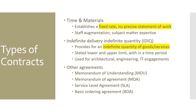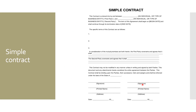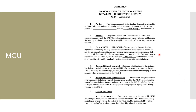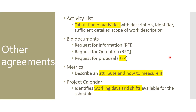Here is a sample of a simple contract showing how two business entities come together, the terms and conditions, and signatures from both parties. This is an example of a Memorandum of Understanding showing the parties, the purpose, terms of MOU, agency responsibilities, and general provisions.